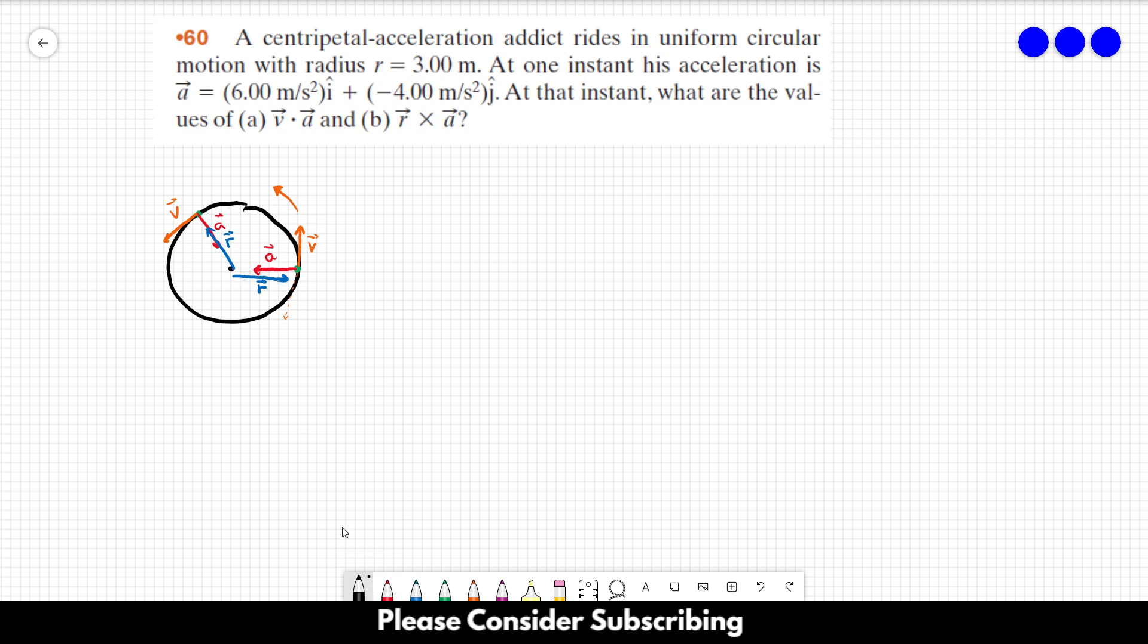For letter A, we want the dot product between V and A. Let's remember that one of the properties of dot product is that it can be calculated using the magnitude of the first vector times the magnitude of the second vector times the cosine of the angle between them.